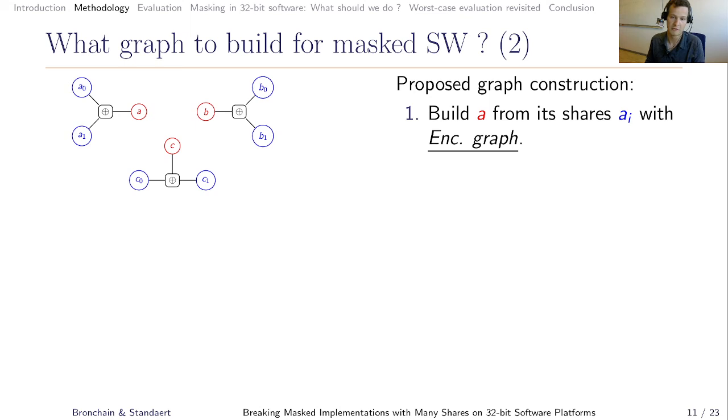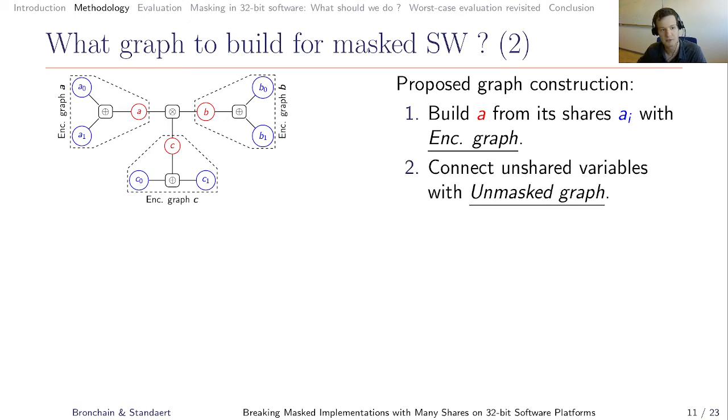What's the efficient methodology we propose? It goes in two steps. First, for each of the secret variables, so A, B and C, we build them from their shares. Let's say here with a two-share example, we have a graph that will, that recombine, we have XOR operations that recombine A1 and A2 to obtain A. Same goes for B0 and B1 that give B, and C0 and C1 that give C. And this small graph, we call them encoding graphs, and there is one for all the secret variables. The second step is to link these secret variables, so A, B and C, by the operations, which is here a multiplication, for example. And this is called the unmasked graph.